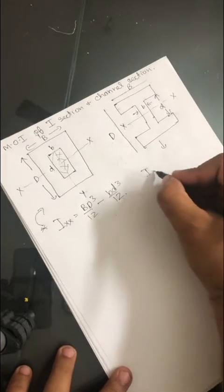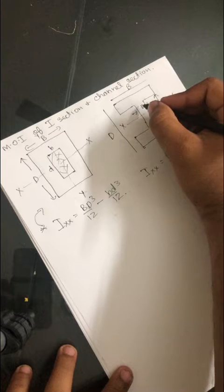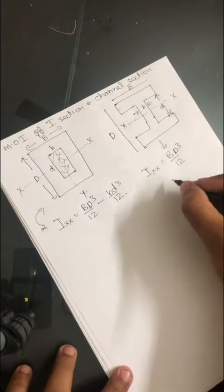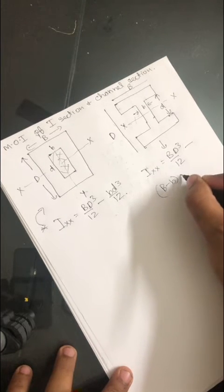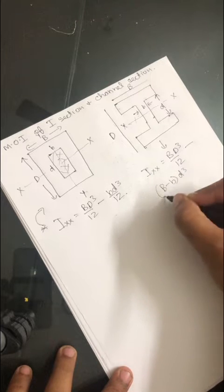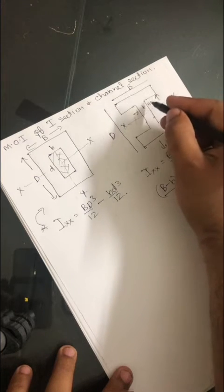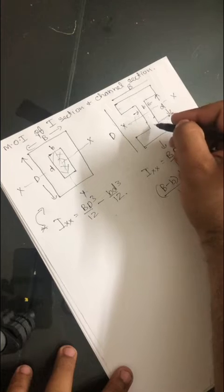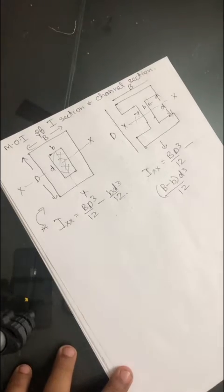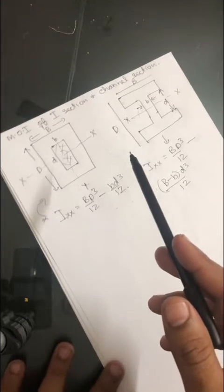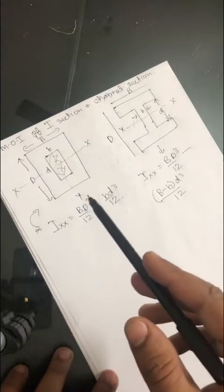For the I-section, we consider Ixx for the whole as Bd³/12. We then subtract the cutout area, giving Bd³/12 minus (B minus b) times d³/12. We have already taken the full width into account, so we subtract the inner portion. That is how you find the moment of inertia for an I-section and a rectangular section with a hole.